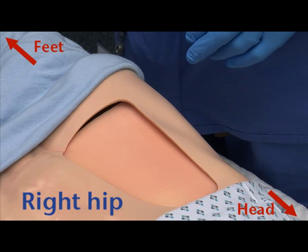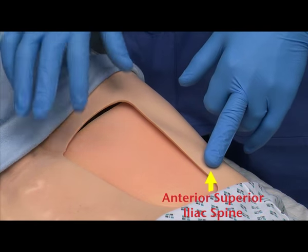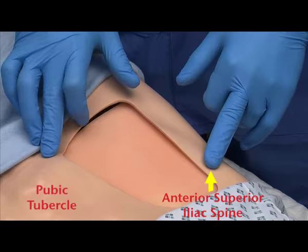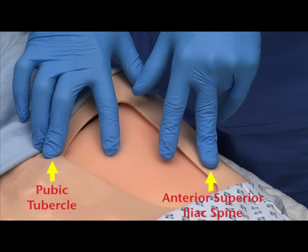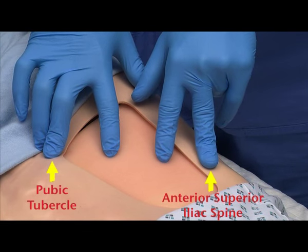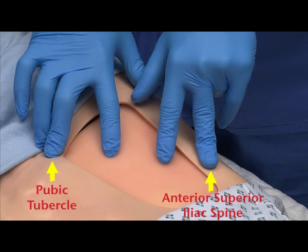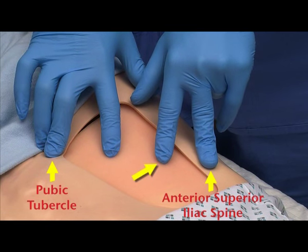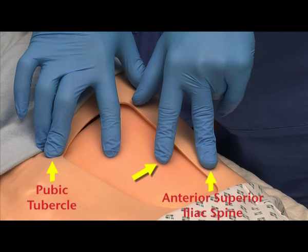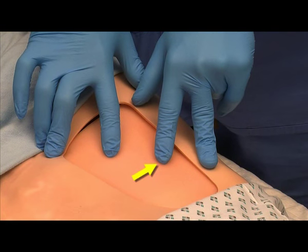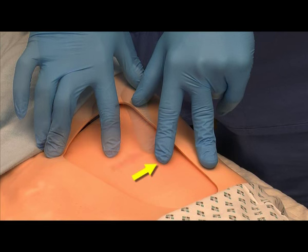For a right hip fracture, visualise a line between the anterior superior iliac spine to the lateral border of the pubic tubercle. Divide the line into three equal parts. The left index finger marks the junction of the lateral and middle third of the line joining the anterior superior iliac spine with the pubic tubercle. The injection entry point is approximately 1cm caudal or distal from that junction.